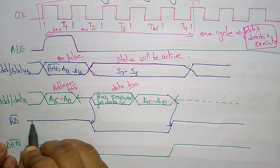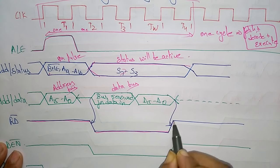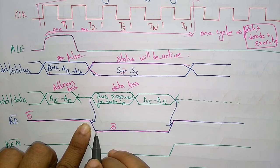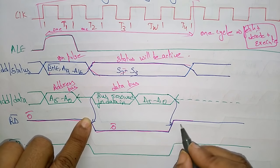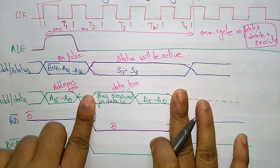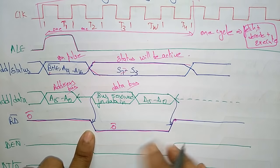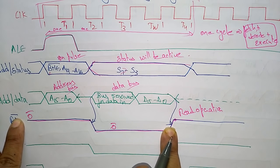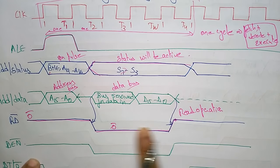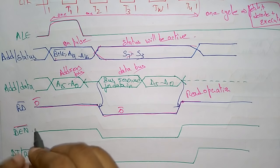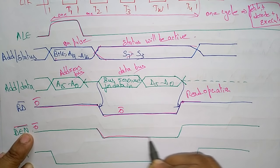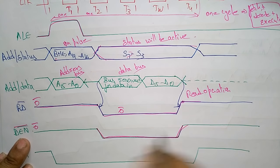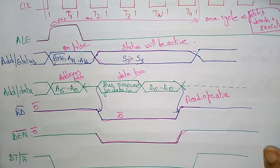This is a read cycle, so RD bar must be active. RD bar is active low, meaning it goes to 0 (down) to be active. During T2 to T4, the data bus is active and we are performing the read operation — reading the data during these clock pulses. Similarly, DEN bar (Data Enable) is also active low, so it goes down during this period. Here we are doing the read clock cycle.